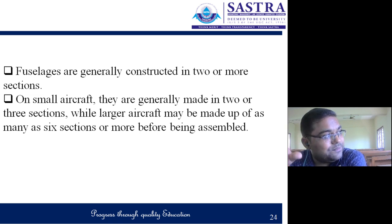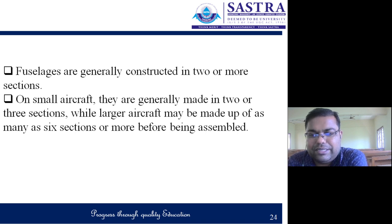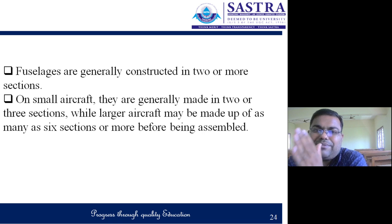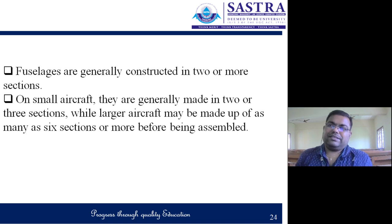Fuselages are generally constructed in two or more sections. On small aircraft, they are generally made in two or three sections, while larger aircraft may be made up of six or more sections before being assembled. The fuselage is not constructed as a single piece — it is divided into small sections and finally assembled together using rivets and bolts.